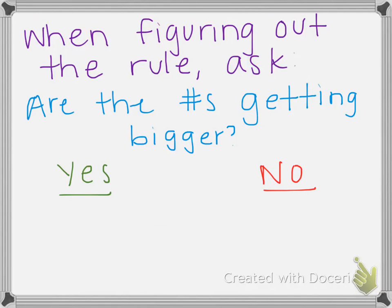When you're figuring out the rule, you can ask yourself the question, are the numbers getting bigger? If the answer to that question is yes, then you are either adding or multiplying. If the answer is no, if your numbers are getting smaller, then you're either subtracting or dividing. The most important thing is just to remember to check the rule for each pair of numbers in the table.